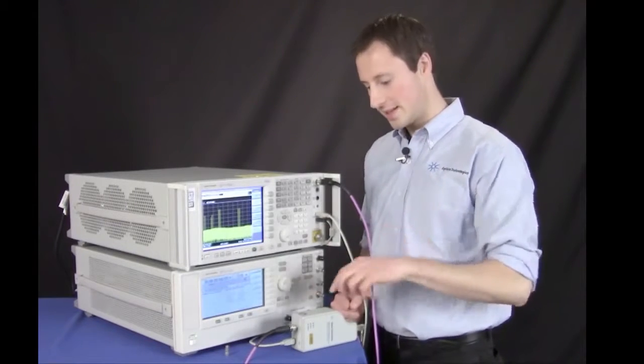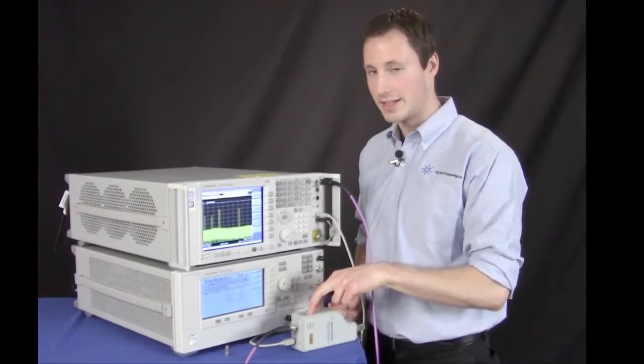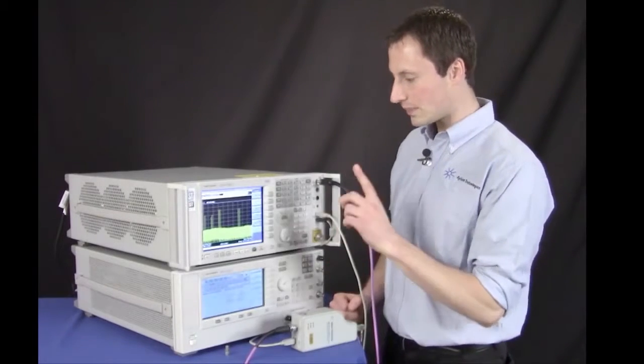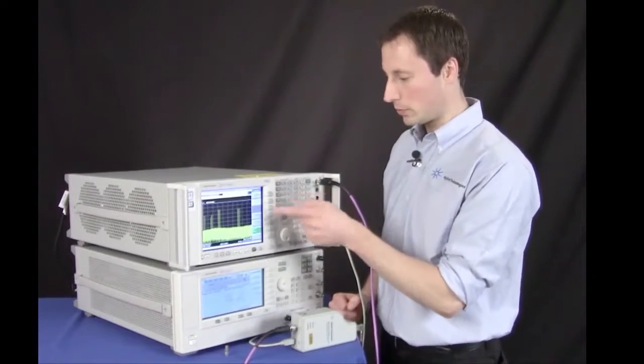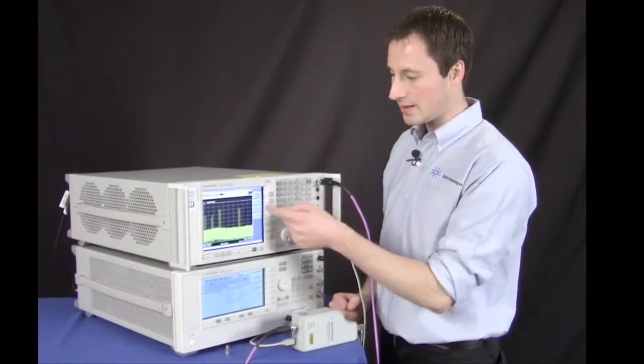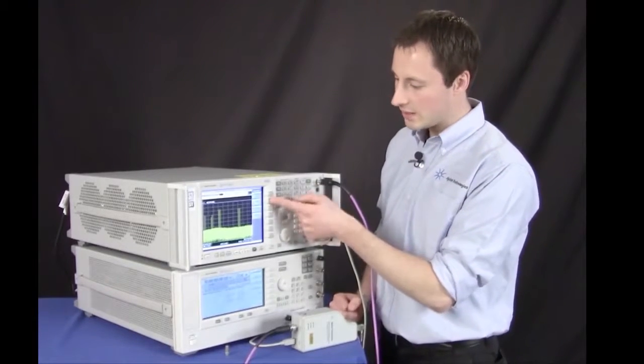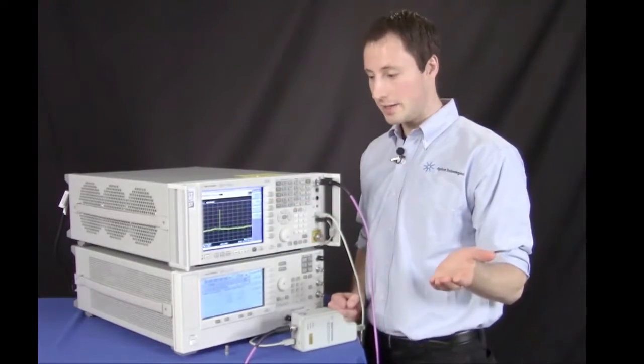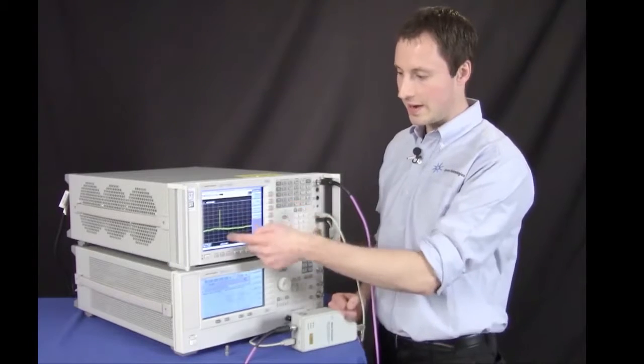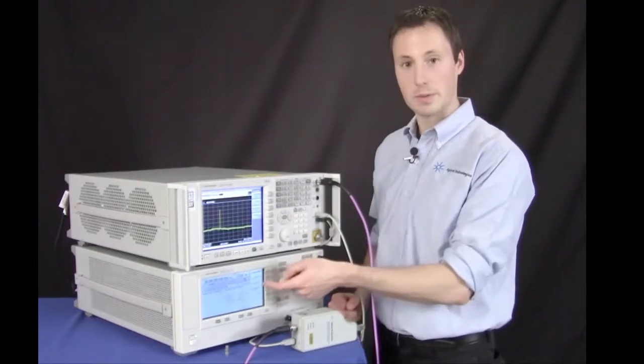The reason for this is that the smart harmonic mixer is not pre-selected. We do have a function that will get rid of these mixing products and that is called signal ID. So we simply turn on the signal ID function and all we can see now is the signal that's coming from the PSG.